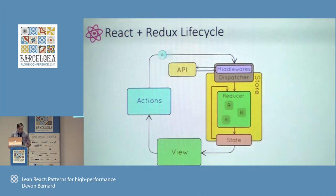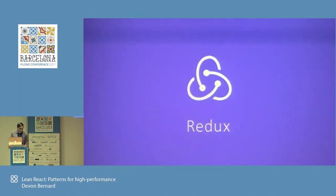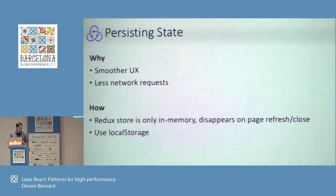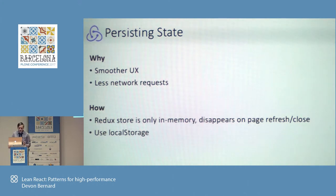A lot of these examples and patterns can be specific to React, but the principles can be generalizable to really any JS environment. Starting off with the React side of things, I'd like to talk about persisting state. We know Redux only does in-memory storage, and when you close a page or refresh, everything disappears. You don't really have data persistence between a session.